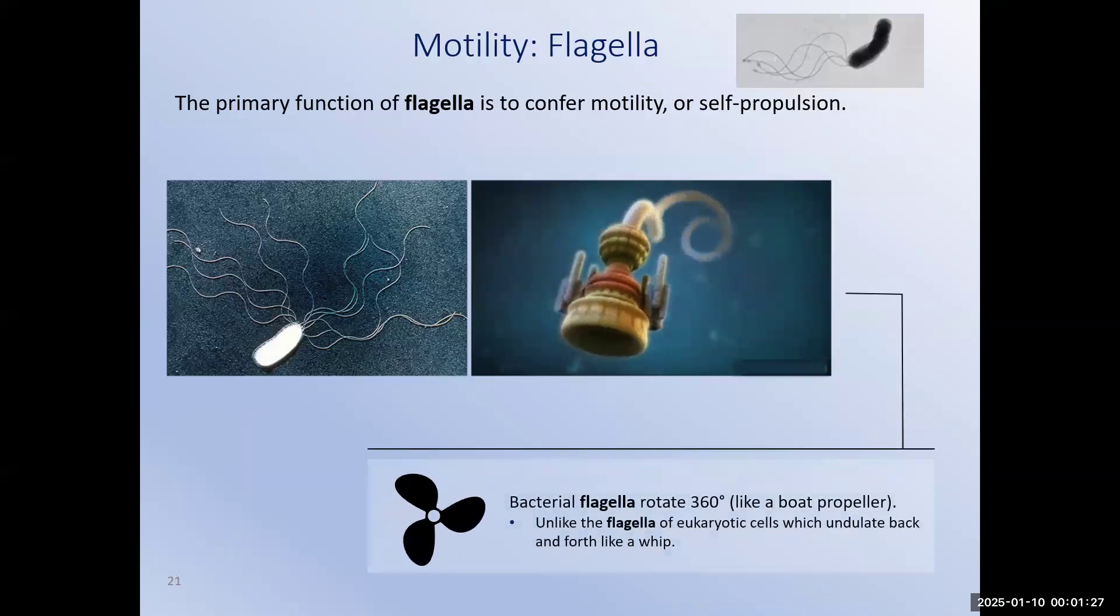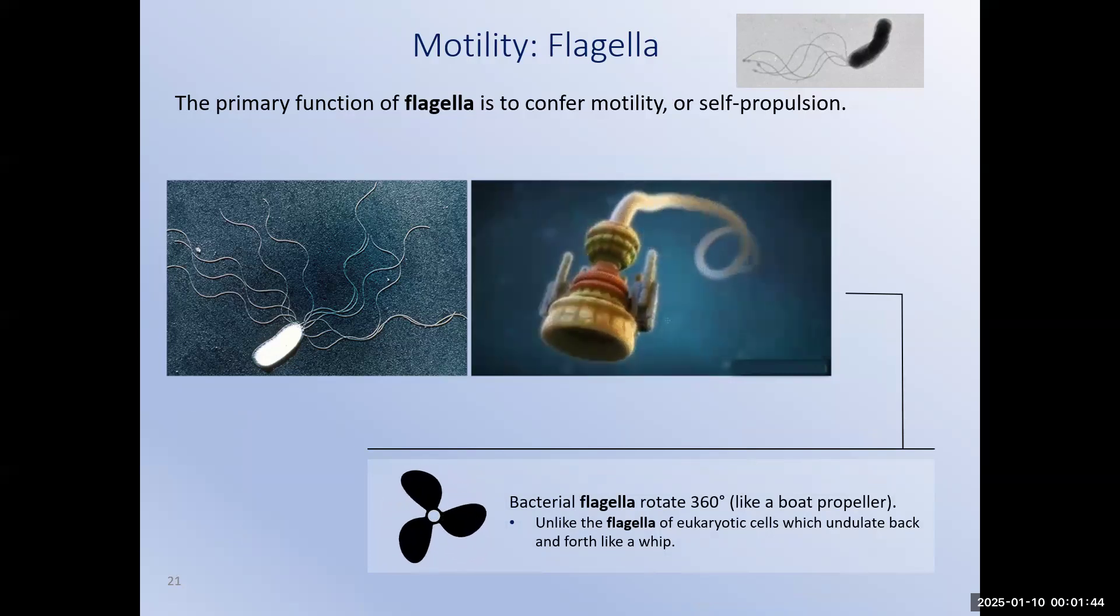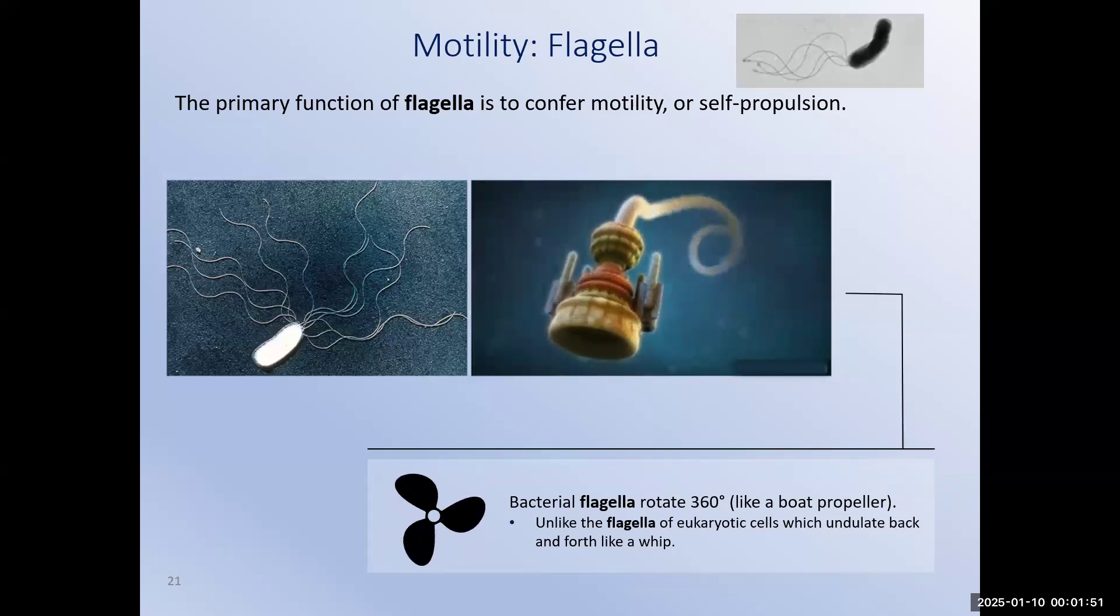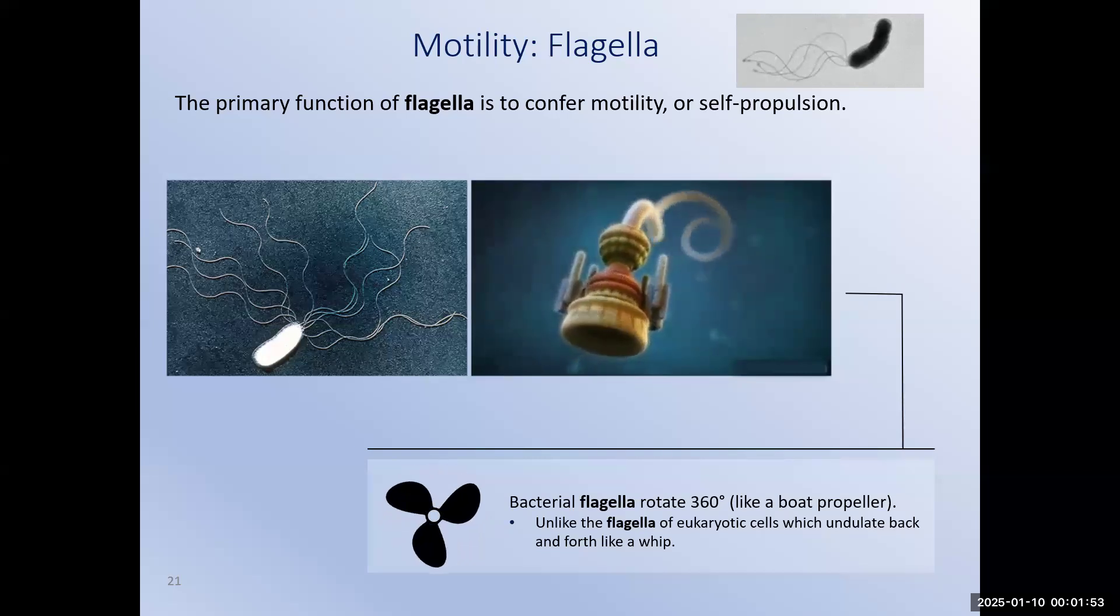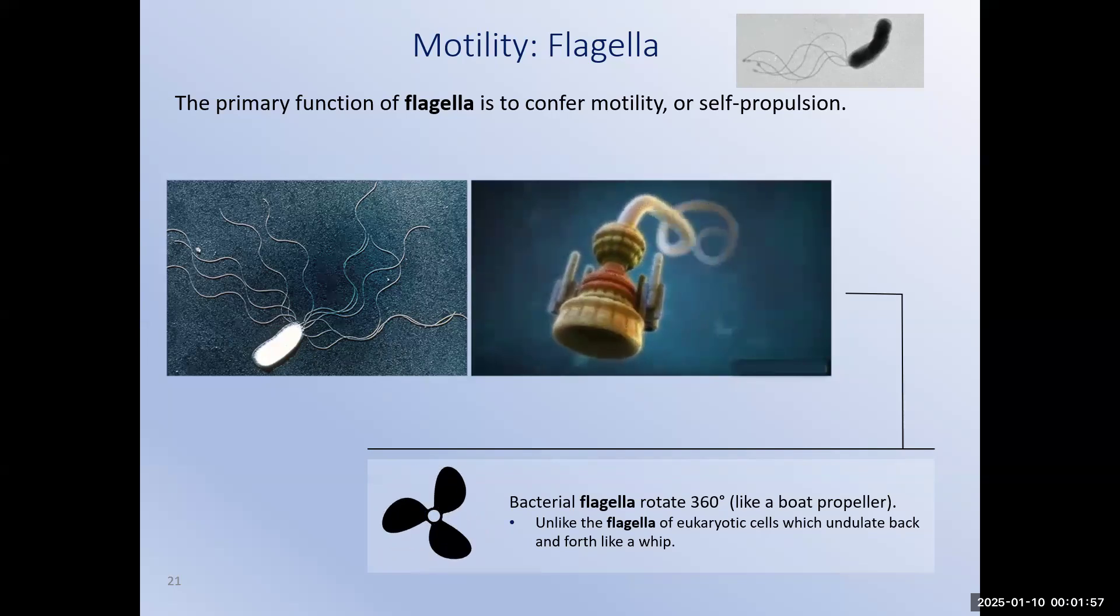Flagella are a bacterial appendage for motility. The flagellum is actually a complex structure. It transforms biochemical energy made by the bacterium into mechanical energy used for moving through its environments. As the motor of the flagellum spins, it's actually like a microscopic motor. The tail attached to it spins like a propeller of a boat. This pushes the bacterium through the environment. The ability of a bacterium to move plays a significant role in its ability to cause human disease.